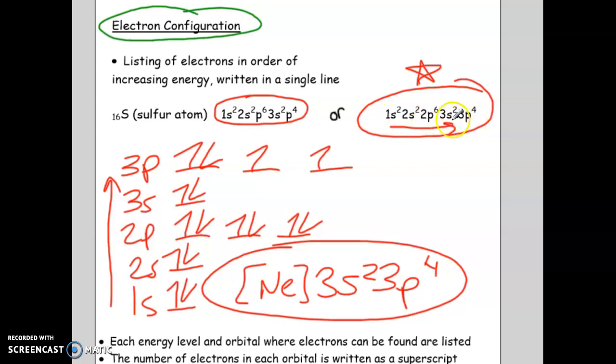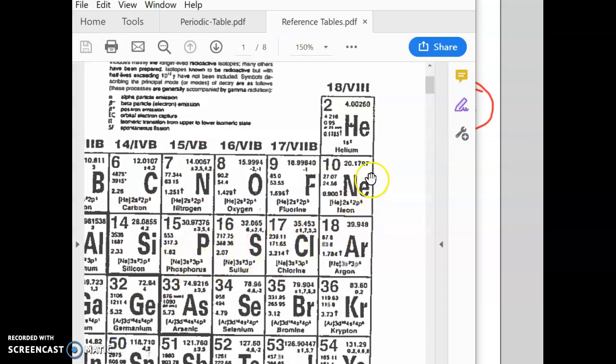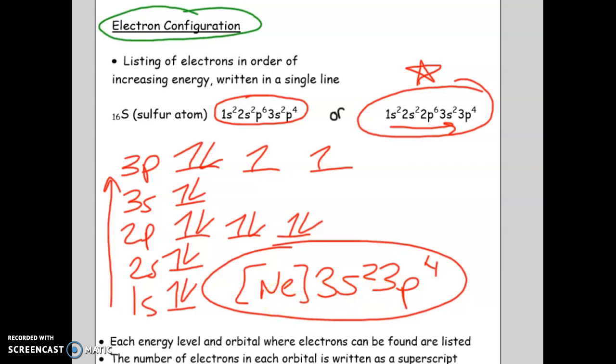What that means is, instead of writing the entire configuration out, they are using the symbol of the noble gas that it is passed. So for example, neon is here, there's 10 electrons. So it's kind of like a short form. It's saying neon has 10 electrons, and then these are the extra electrons on top of neon. Remember that neon has 10 electrons, and then this is representing these 6 extra electrons, because there's 16 total.